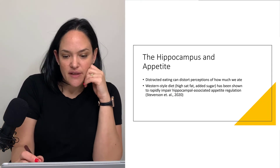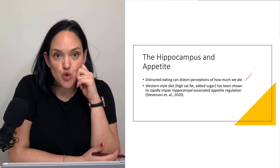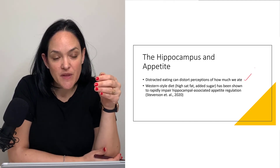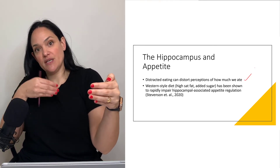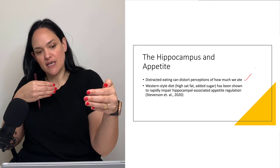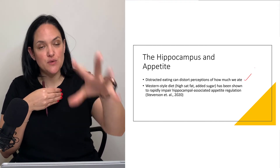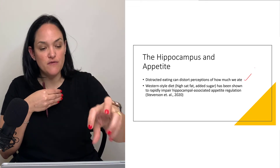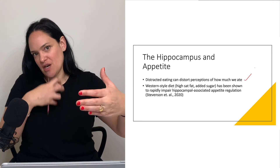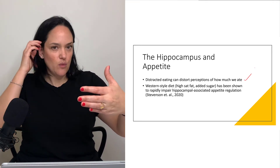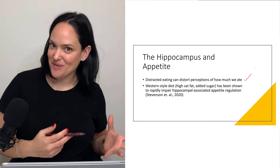Distracted eating can distort perceptions of how much we eat. If our hippocampus is measuring how much we're eating right now against our memories of how much is an appropriate amount, but we're not providing proper input through our sensory pathways and prefrontal cortex integration, what we are currently eating can't be measured against what we have learned to be an appropriate amount of food.